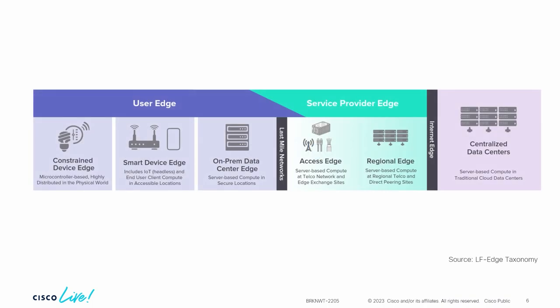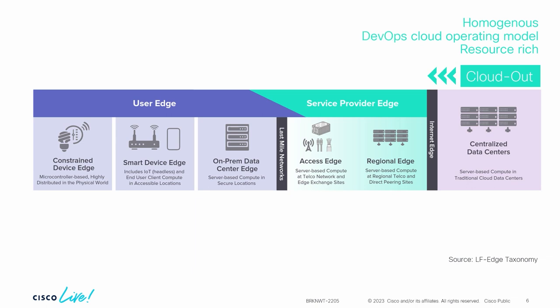Which edge? There are many edges. Following Linux Foundation edge taxonomy, you can start from data centers — very centralized — all the way to sensors at the very far edge. There are two approaches to building an edge solution. The historic approach, also what the hyperscalers do, is what Gartner calls CloudOut — extending the cloud operational model further and further to the edge, treating a customer location like a region, running Kubernetes on a rack at the customer site but remotely controlling that cluster from the cloud. That means you need decent connectivity, a tunnel, and everything is cloud-operated.